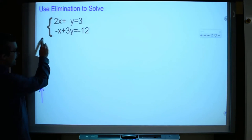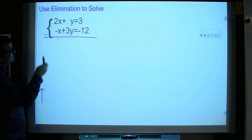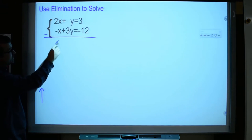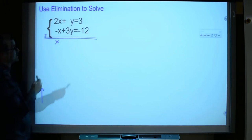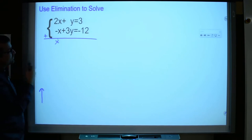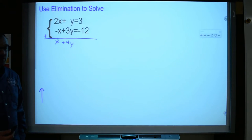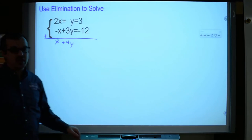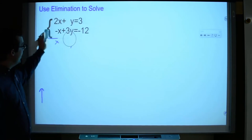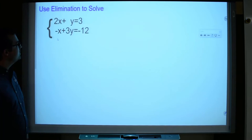Now you'll notice if we try to add right away 2x minus an x, or 2x plus a negative x there, we'll just leave you with an x, so that didn't eliminate. Y plus 3y here, that's going to be 4y, so you'll notice nothing eliminated. I'm not going to continue going on here because nothing eliminated, and that's exactly what I'm trying to do. So now I've got to start manipulating these equations so that they actually eliminate.